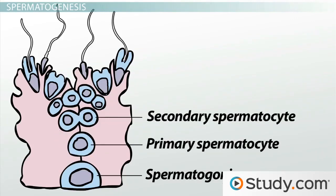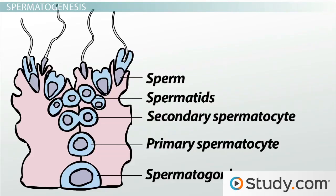The primary spermatocyte migrates away from the base of the Sertoli cells and divides to form two secondary spermatocytes. The two secondary spermatocytes continue migrating and then divide to form four haploid spermatids. After meiosis is complete and each spermatid has the correct number of chromosomes, they begin differentiating into fully functional sperm, with their chromosomes packed tightly in the nucleus, an acrosome capping the nucleus, and a single flagellum to propel the sperm toward the ovum.